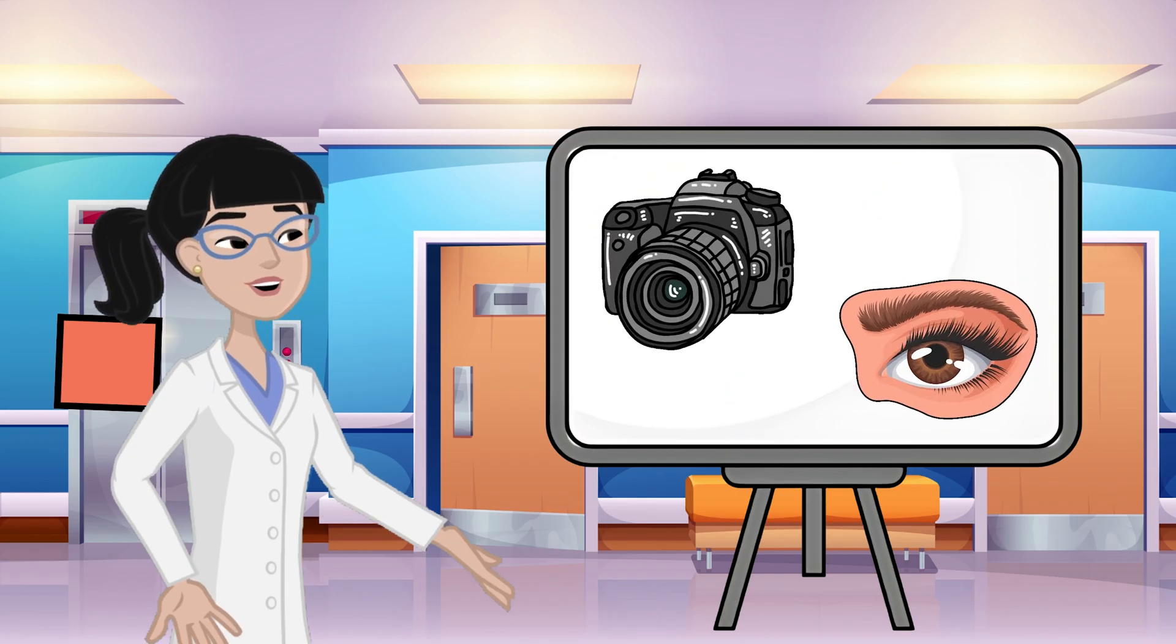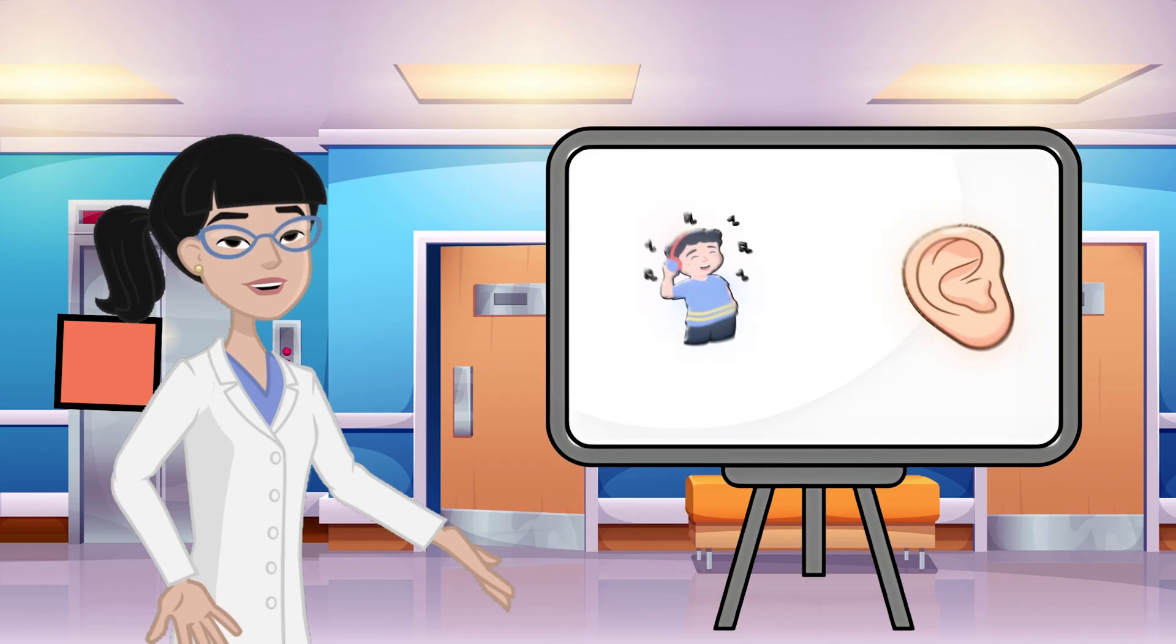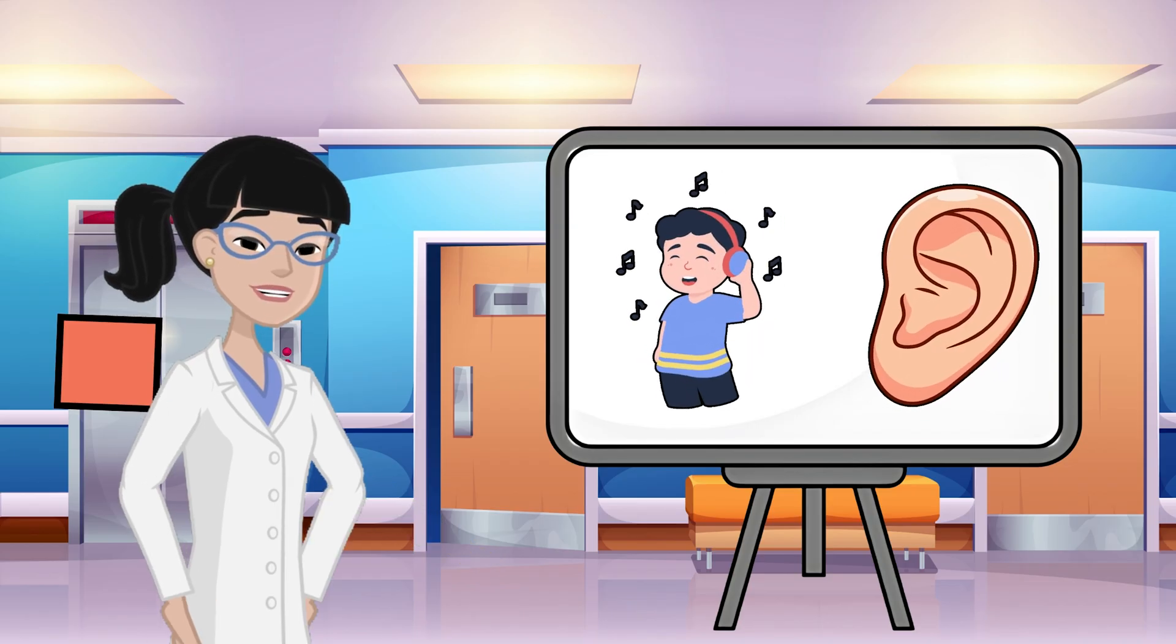Your eyes are like tiny cameras, showing you the world around you. Your ears help you hear music, voices, and even tiny sounds.